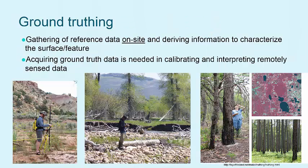While we often use data obtained by someone else — an agency or otherwise — from somewhere else, remotely, a very important aspect of using remotely sensed data is ground truthing. This involves spending time on the ground, at the location of interest, gathering information that is used in calibrating and interpreting the remotely sensed imagery or data.